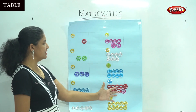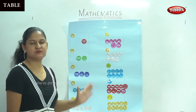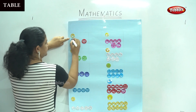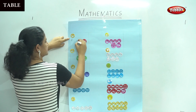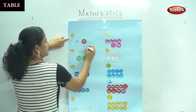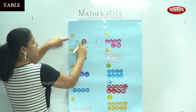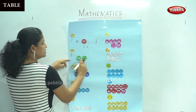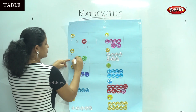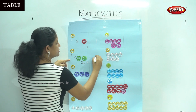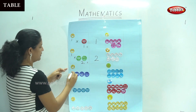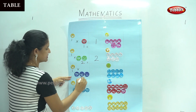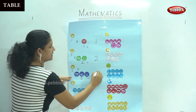We have some beautiful smiley faces and we are going to place them in the table. 1 time and we have 1 — so 1 times 1 is nothing but number 1. 1 times and we have 1, 2 — so 1 times 2 gives us number 2. We have 1 time, 1, 2, 3 smiley faces — that gives us number 3.